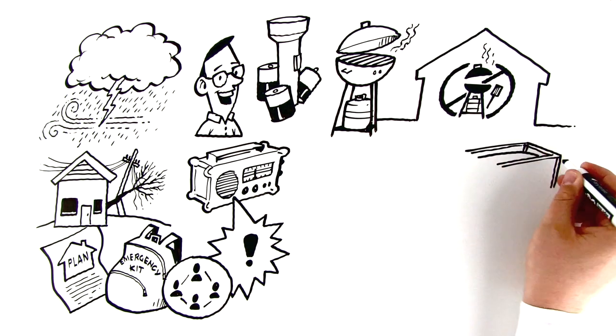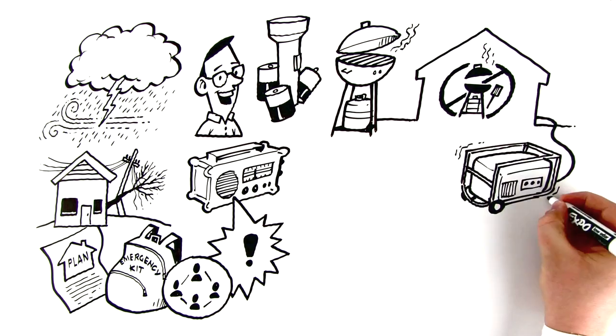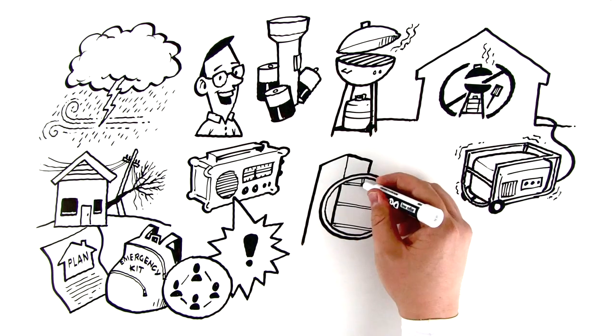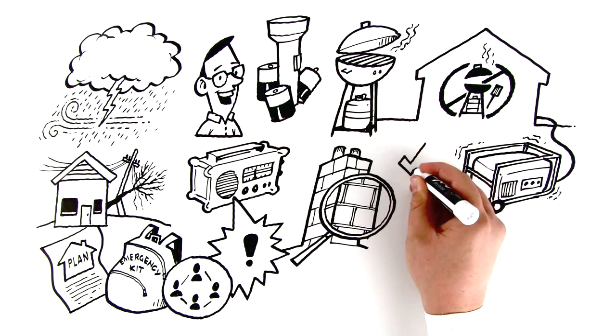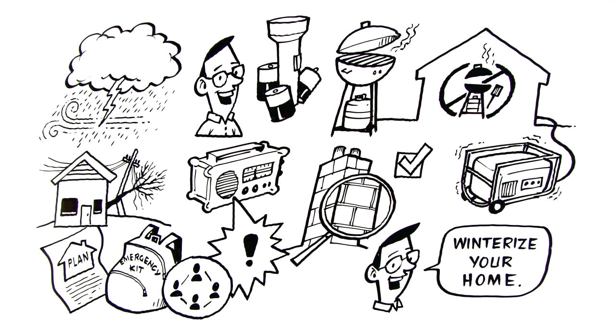Consider a home generator for extended outages but never operate it indoors. Regularly inspect your chimney to make sure it is safe to use if needed. And make sure to properly winterize your home.